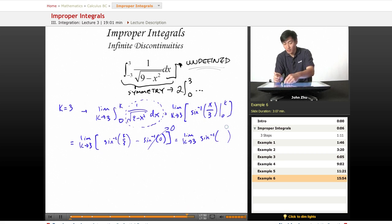When we plug in the 3 for k, we'll get inverse sine of 3 over 3, which equals 1. And this becomes pi over 2.